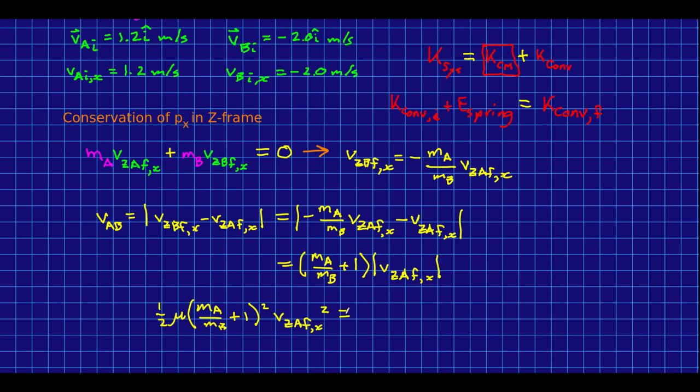where I've dropped the absolute value because it's being squared. And that equals our initial convertible kinetic energy, which we could have easily calculated, plus the spring energy, which we were given.